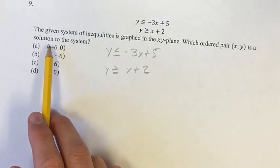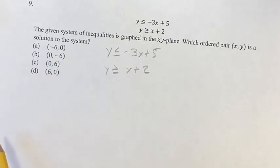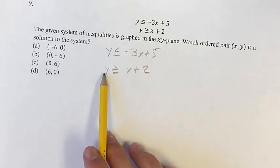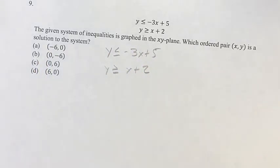So for the first one, we'd be plugging negative 6 in for x and 0 for y. Since only one of these can be true, only one of them will have both of these inequalities be true when we plug in the points.